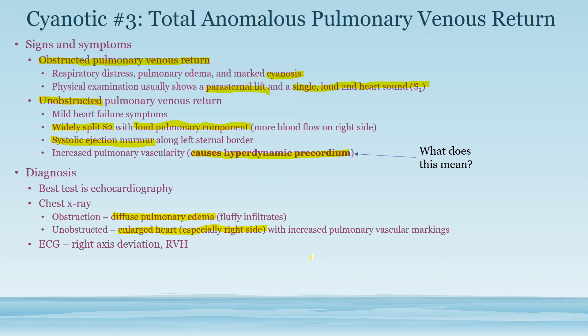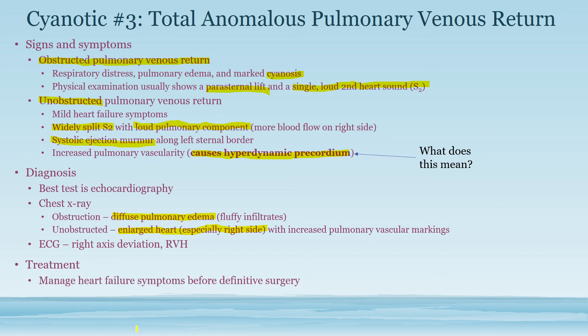On EKG, because the right side is more affected and much larger than the left, you will see right axis deviation and right ventricular hypertrophy. For treatment, because heart failure symptoms and diffuse pulmonary edema are present, these must be managed medically before surgery. You don't want to put a crashing patient into surgery until symptoms are controlled and excess fluid is managed; then surgery can be performed to save the patient.